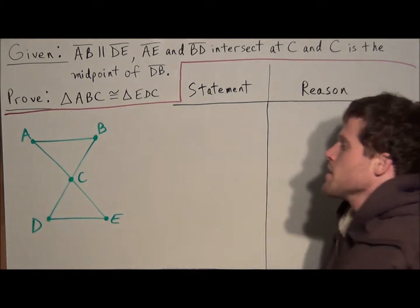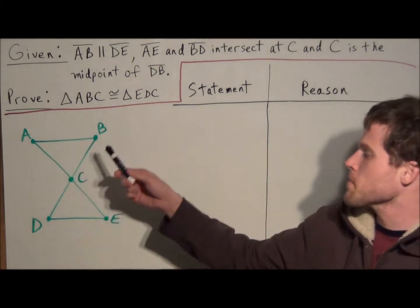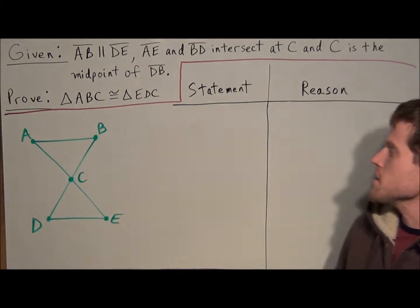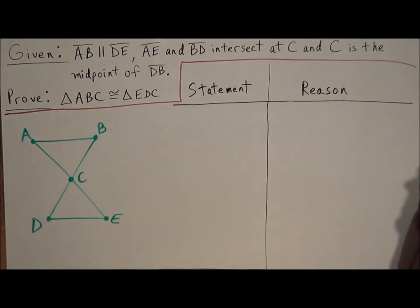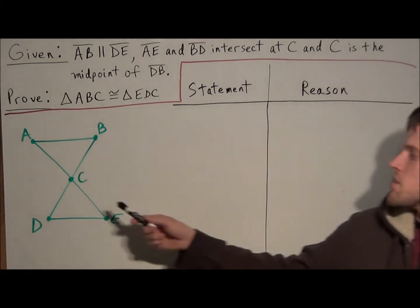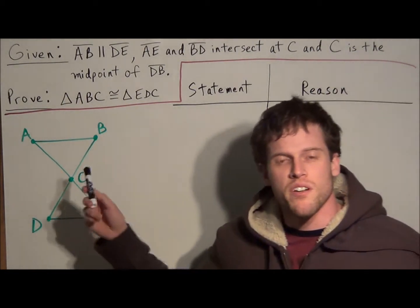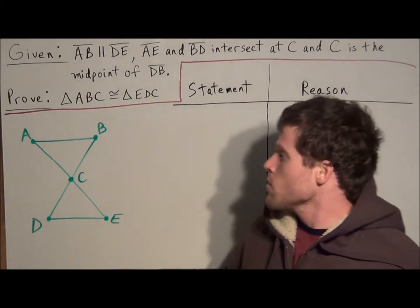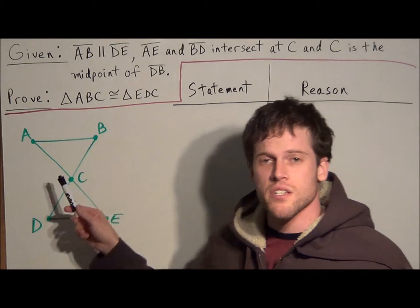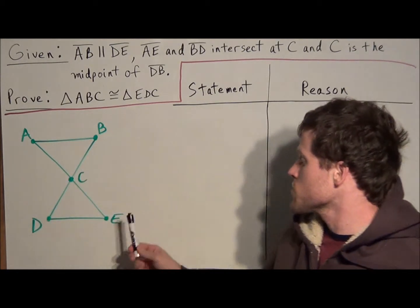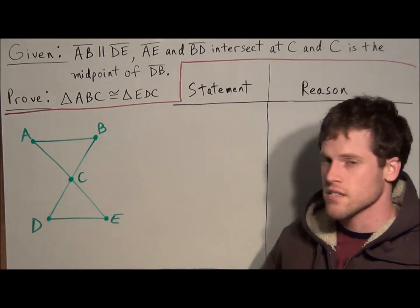We have given: AB is parallel to DE, AE and BD intersect at C, and C is the midpoint of BD. We want to prove that triangle ABC is congruent to triangle EDC.